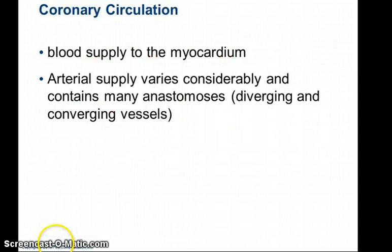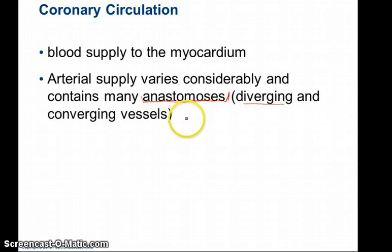Next we'll discuss coronary circulation — the blood supply to the myocardium itself. The myocardium is made up of cardiac muscle cells that need oxygen and nutrients and must remove CO2 and wastes. So the heart has its own arterial blood supply and its own set of veins. The arterial supply has many anastomoses — where a blood vessel diverges and splits repeatedly into smaller vessels that plunge into the tissue. If one component is blocked, another still reaches the tissue. Anastomoses are found where it's critical that blood reaches its target.